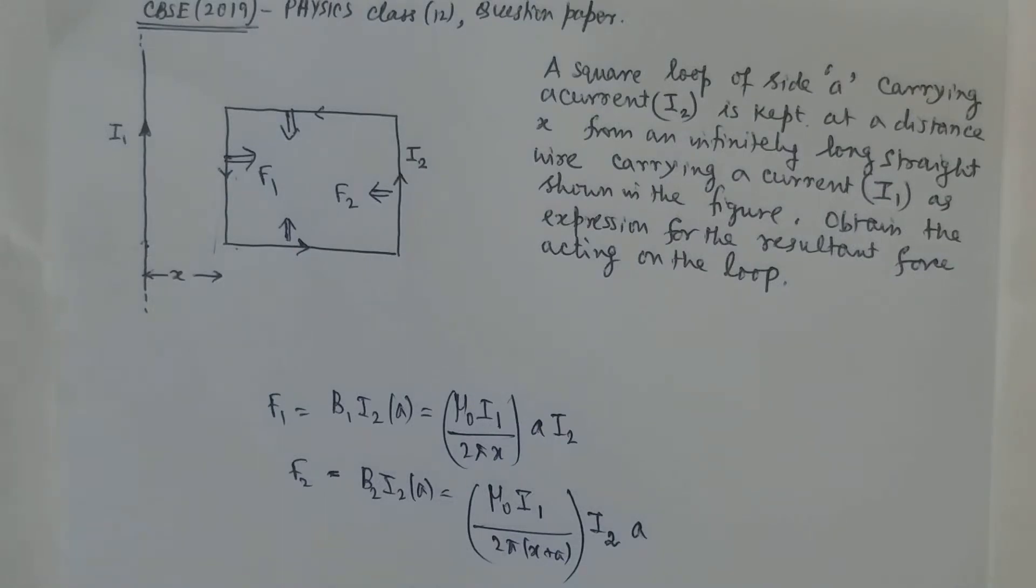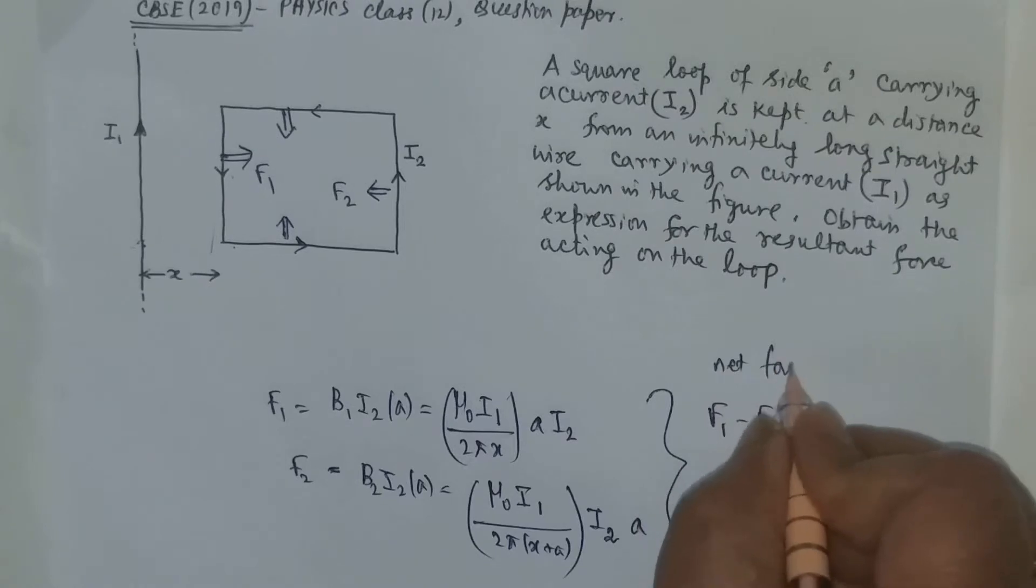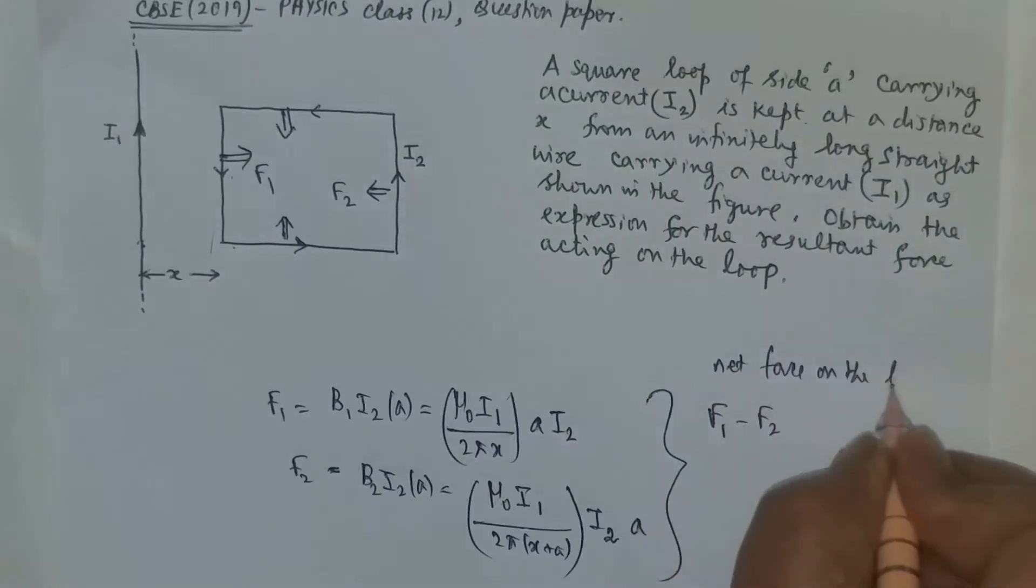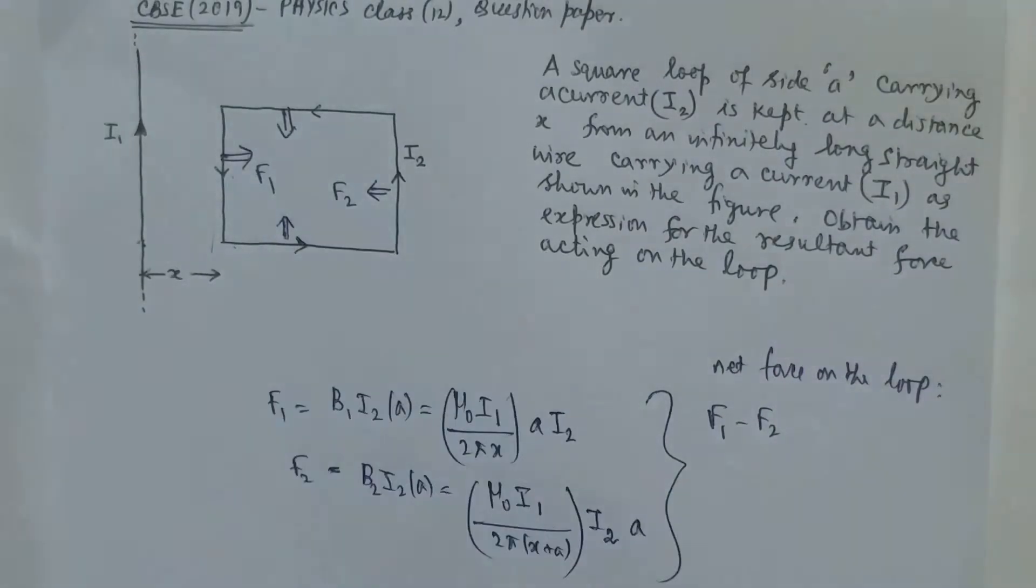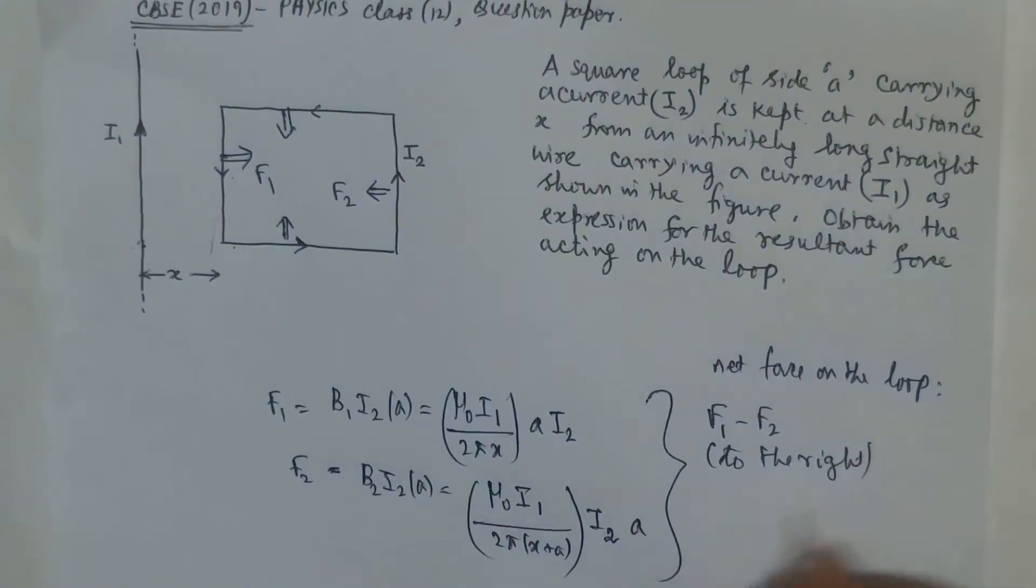Now let us find out the net force: F1 minus F2. It is the net force on the square loop, F1 minus F2 to the right. The net force will be to the right.